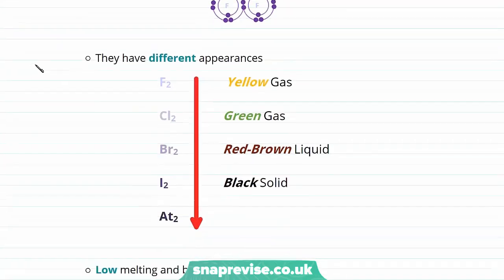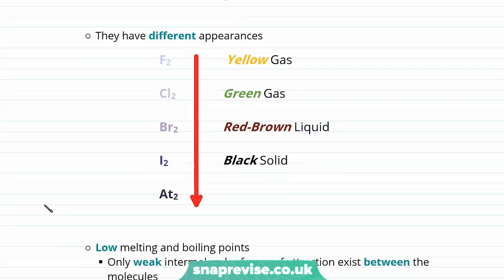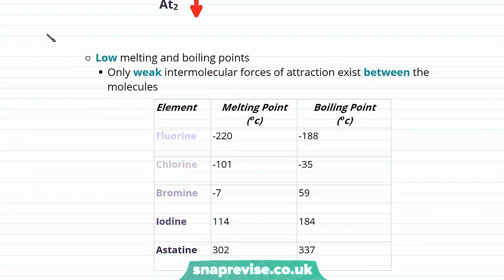Our halogens all have different appearances: fluorine is a yellow gas, chlorine a green gas, bromine a red-brown liquid, and iodine a black solid at room temperature. They also all have low melting and boiling points — fluorine has a melting point of −220°C and boiling point of −188°C. This is because there are only weak intermolecular forces of attraction between the diatomic molecules — specifically London forces, those induced dipole–induced dipole forces of attraction, which are relatively weak.